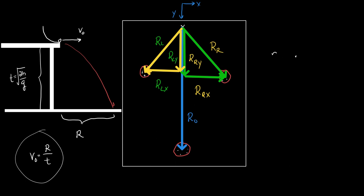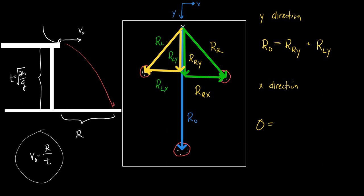Momentum is supposed to be conserved. Before the collision there was only momentum in the Y direction. So in the Y direction the original momentum was R-naught, and in the X direction the original momentum was zero because the ball was just traveling in the Y direction. After the collision, the momentum of the ball in the Y direction is R-right-Y plus R-left-Y — the two balls carry away the momentum in the Y direction.